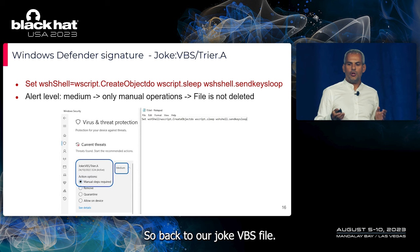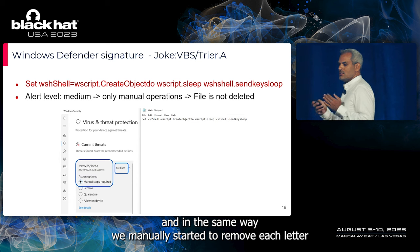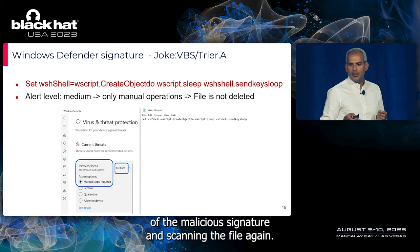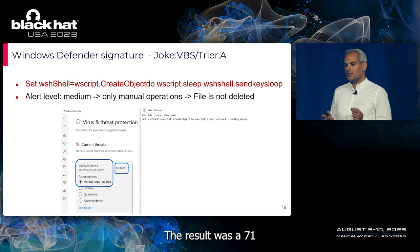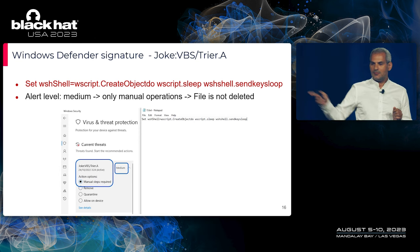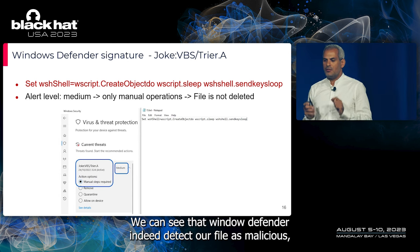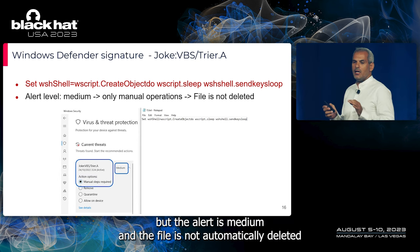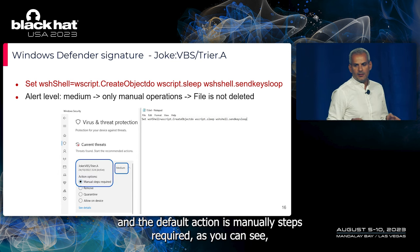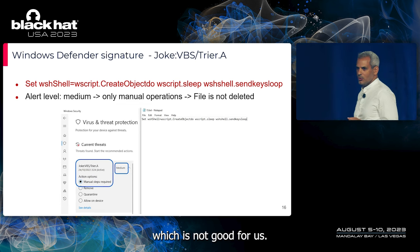Back to our Joke.VBS file: we started with 120 characters and manually removed each letter of the malicious signature, rescanning each time. The result was a 71-character signature that still triggers Defender. However, the alert was medium severity and the file was not automatically deleted — the default action was 'manual steps required,' which is not good for our purposes.